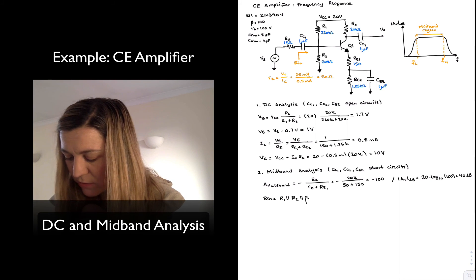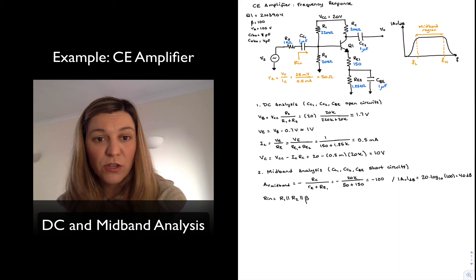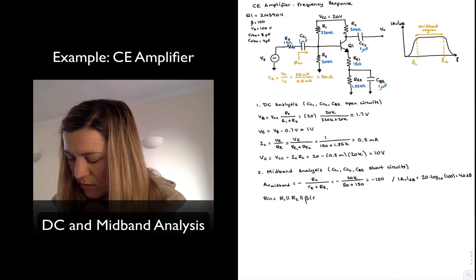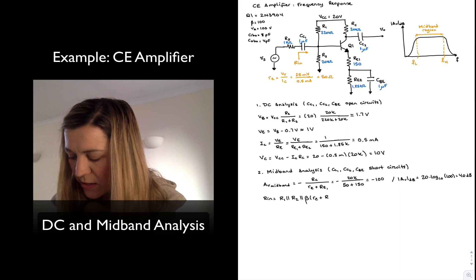which is, by the reflection rule, beta times whatever is connected to the emitter, in this case, little re plus RE1.